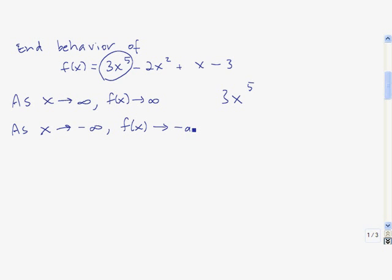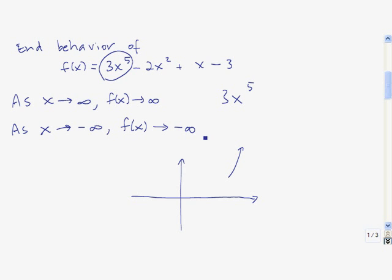So if I were to actually graph this, it would look something like this. For large x, the function is going to infinity. And as x goes to negative infinity, the function is going to negative infinity. So the end behavior would look something like this.